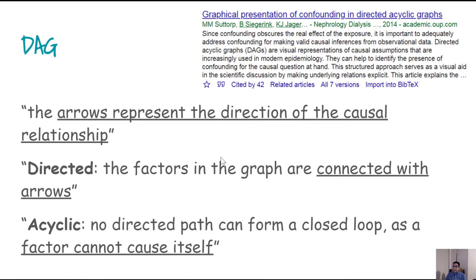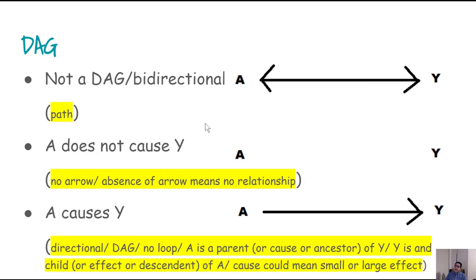A bidirectional relationship is not a DAG, because a DAG must go in one direction only — either this direction or that direction, not both. If we remove the bidirectional parts, what remains is a path. A path exists between A and Y regardless of direction. The absence of an arrow means A is not causing Y and Y is not causing A — no arrow means no causal relationship.